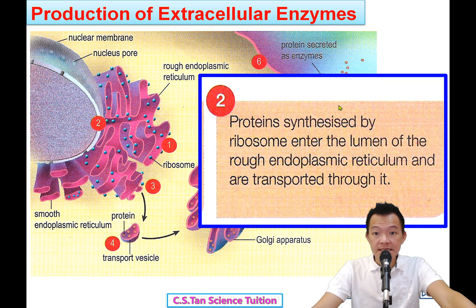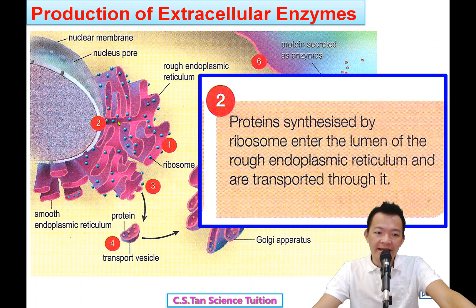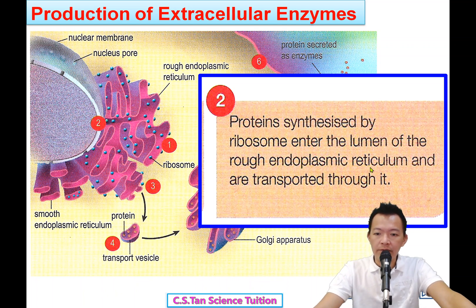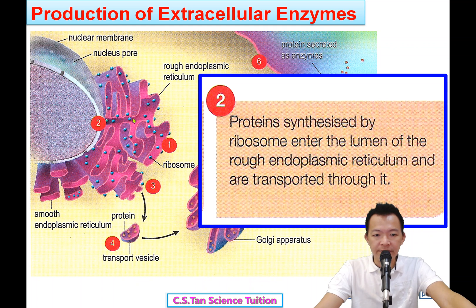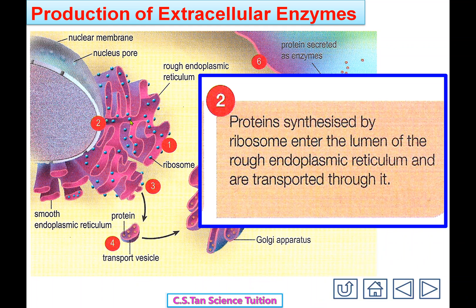Number 2: protein synthesized by the ribosomes enters the lumen of the rough endoplasmic reticulum and is transported through it. After the ribosome makes the protein, the protein enters the lumen — lumen 就是管里面的空间 — of the rough endoplasmic reticulum and is transported through it. This was also taught in Chapter 2. The endoplasmic reticulum transports the protein.